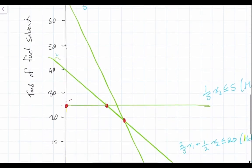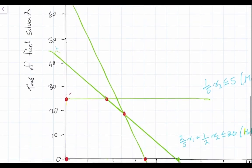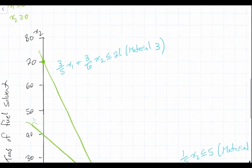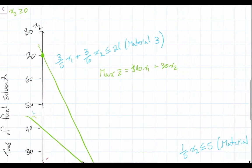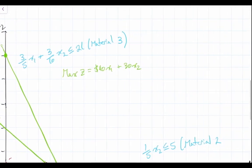So we'll recall in this problem that our objective function is equal to the following: the max of Z is equal to 40x1 plus 30x2. That was our objective function. So let's go ahead and plot our objective function line.